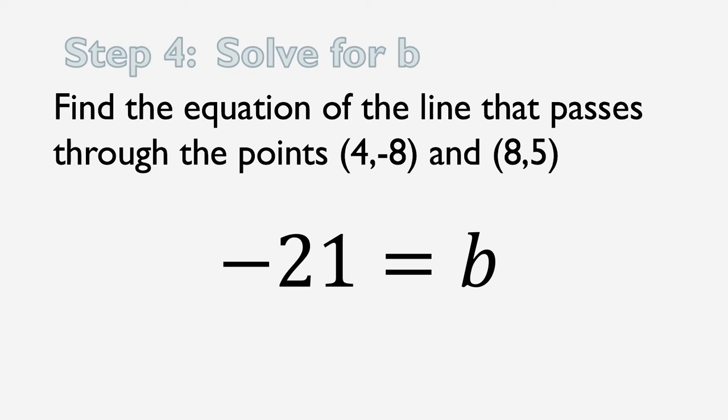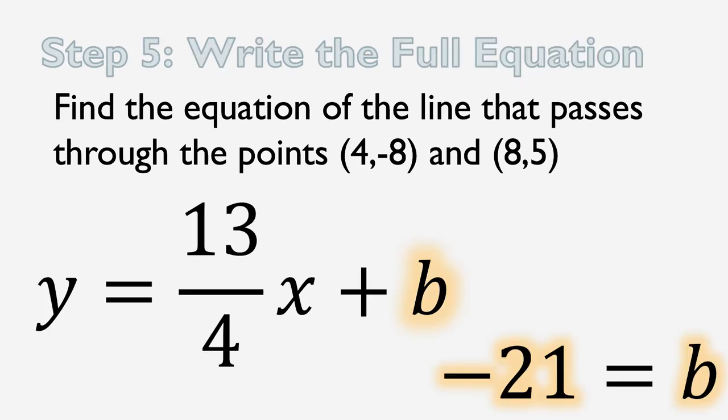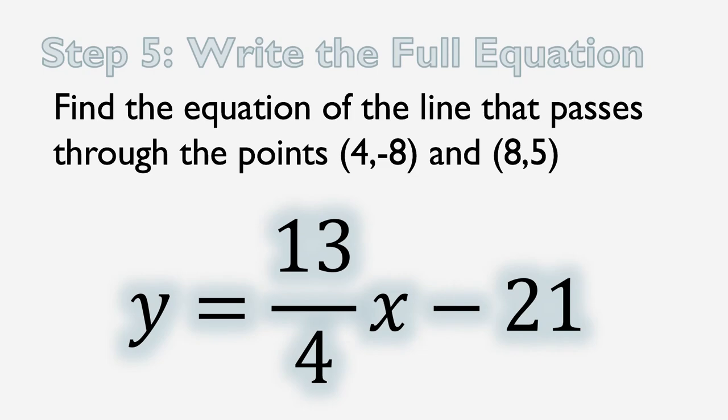And now we've found b, the y-intercept, and we've found the slope. And so we have both of the ingredients we need to write an equation in slope-intercept form. So our final step is to write the full equation. Our partial equation was y equals 13 over 4x plus b. We just solved for b and found that b is negative 21. So we'll plug that into the b-slot and that is our equation. y equals 13 over 4x minus 21.